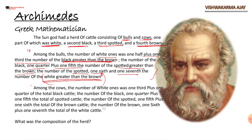Among the cows, the composition is also given as a puzzle. The number of white cows was one third plus one quarter of the total black cattle. The number of black cows is one quarter plus one fifth the total number of spotted cattle. The number of spotted cows is one fifth plus one sixth the total number of brown cattle. The number of brown cows is one sixth plus one seventh the total number of white cattle.